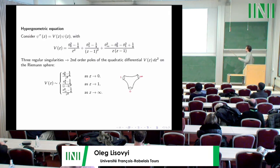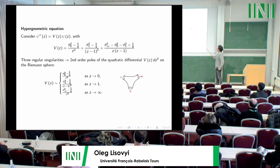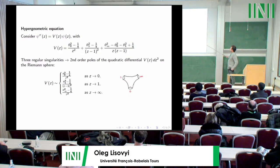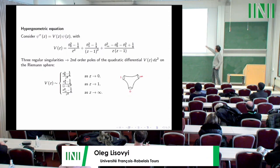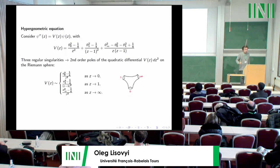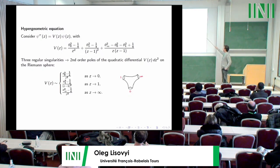Let's start with the most elementary example: the hypergeometric equation. This is the potential — a pictorial representation on the Riemann sphere. The three holes correspond to three second-order poles of the square root of this quadratic differential. You have three parameters which encode local monodromy or the singular behavior of Frobenius solutions near the singularities, and basically you have no further freedom — this is the only expression you can have if you require no more than three second-order poles.